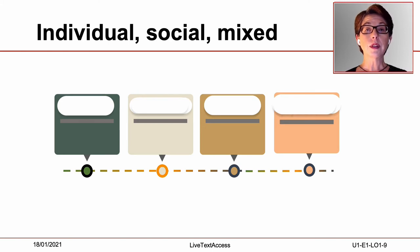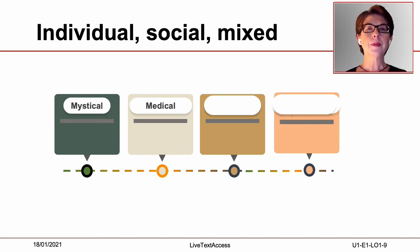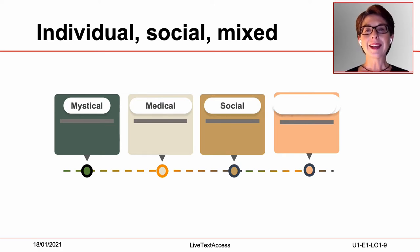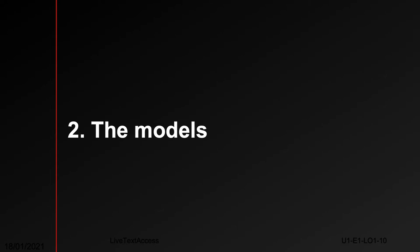Individual approaches put the focus on the person — that is, on individuals and their impairments. The mystical, religious and the medical models are both individual approaches. Conversely, social approaches put the focus on disability as a product of the environment. This approach has led to the social model of disability. Lastly, there are mixed approaches that consider both the impairment and contextual factors, as is the case in the biopsychosocial model of disability. Let's see some characteristics of each of them.